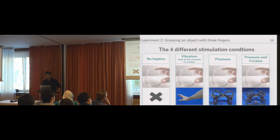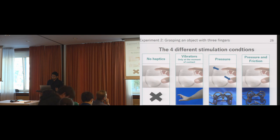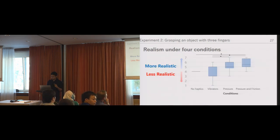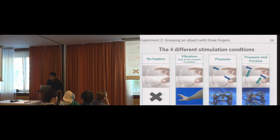These are the four different stimulation conditions. First one is no haptics and second one is vibrators presented, presenting vibration to the fingers when the fingers were in contact with the object. The third one is pressure sensation was presented to the three locations when the fingers grasped the object. And the fourth is pressure sensation was presented to the three locations and the tangential force was presented to the three locations when lifting the object.